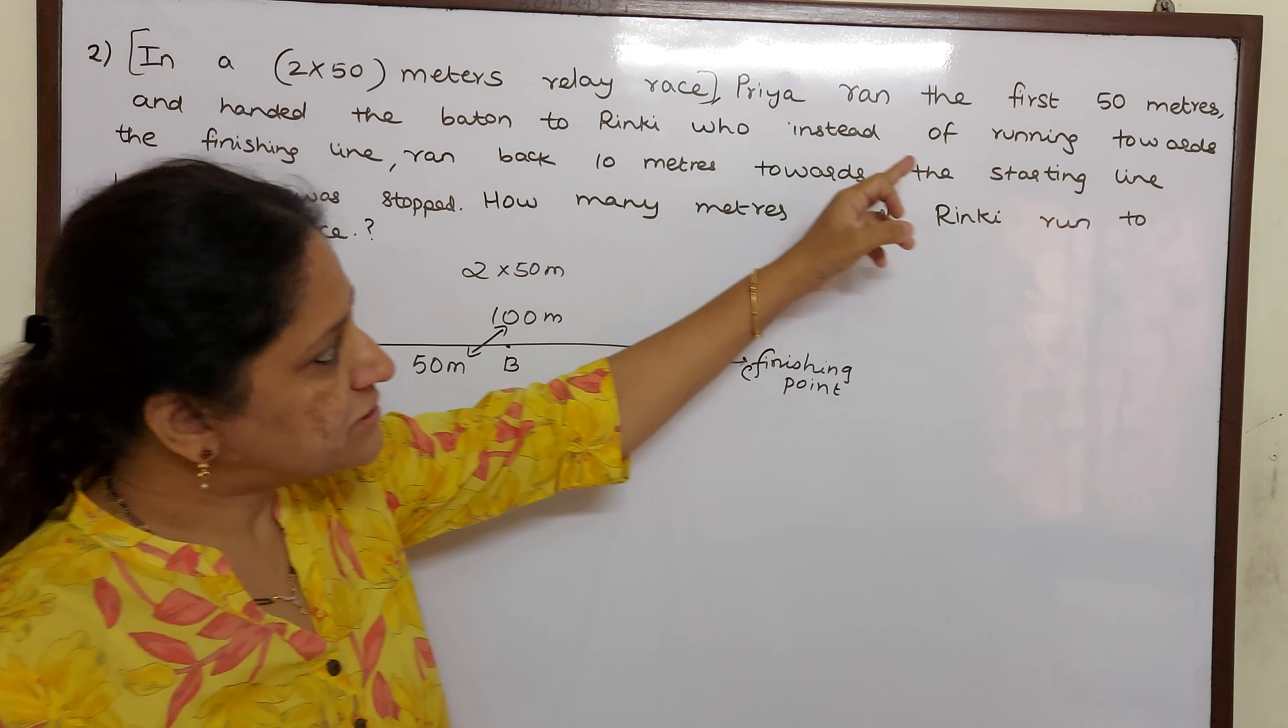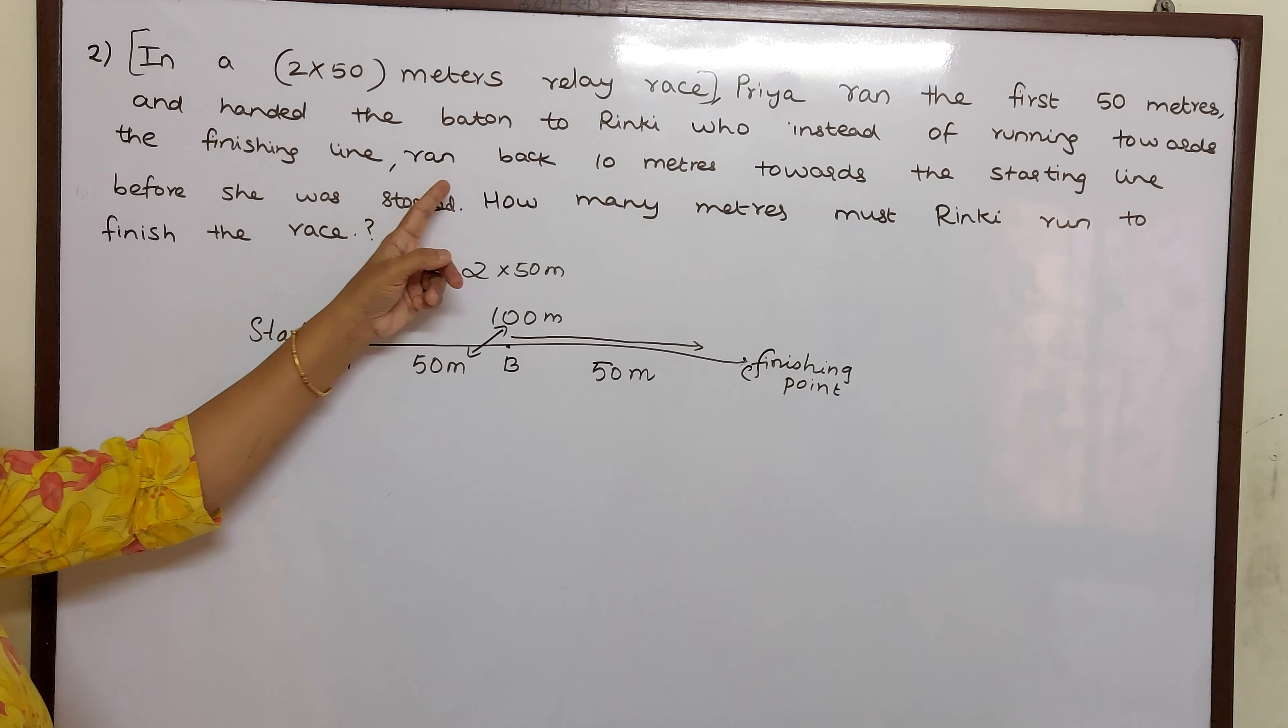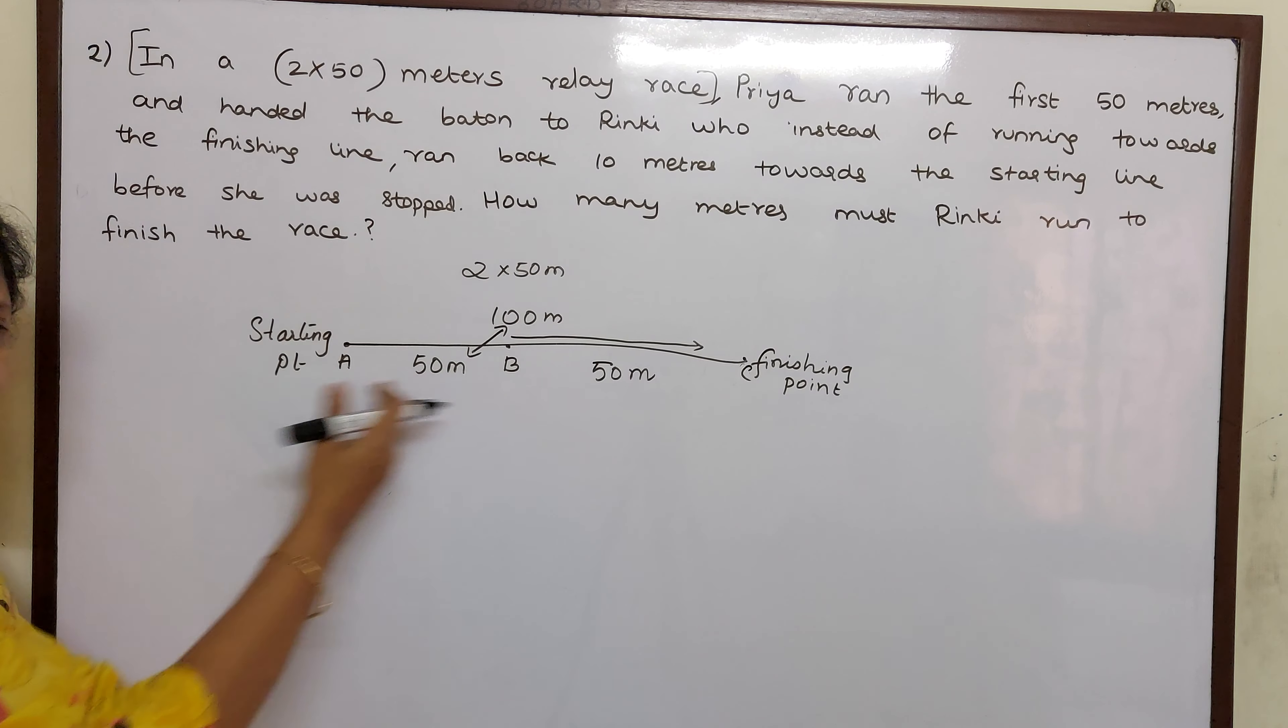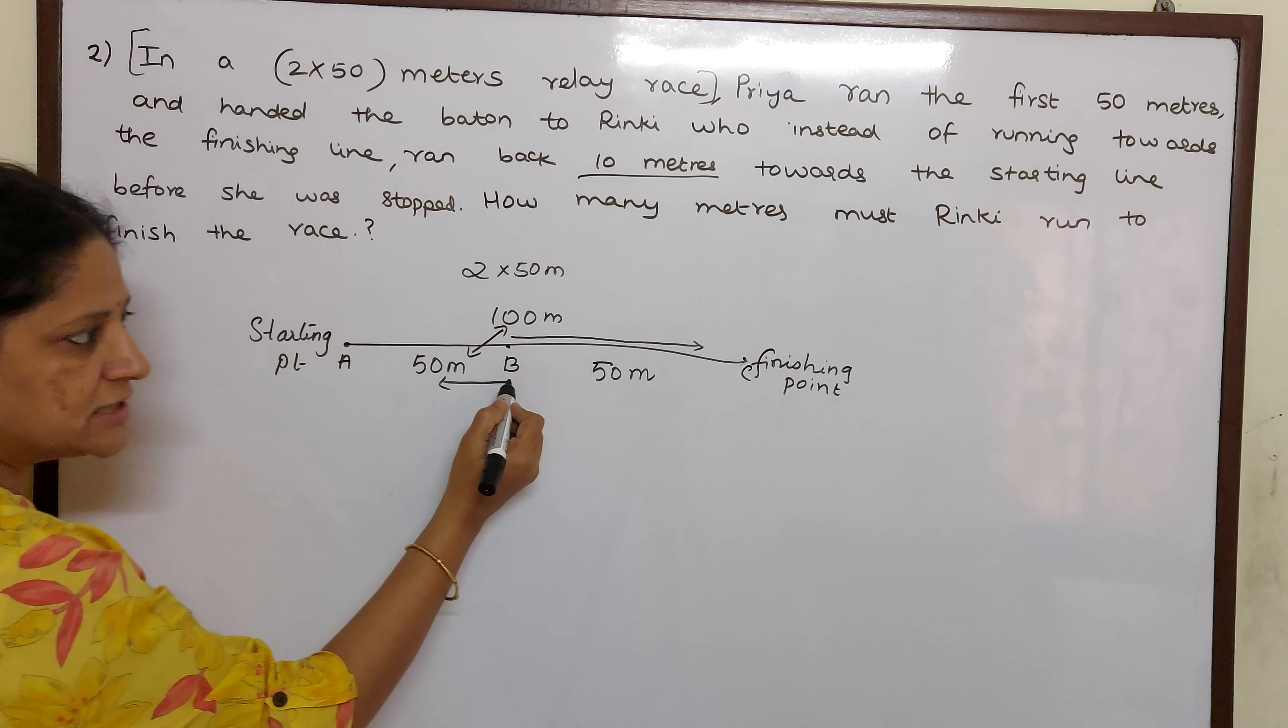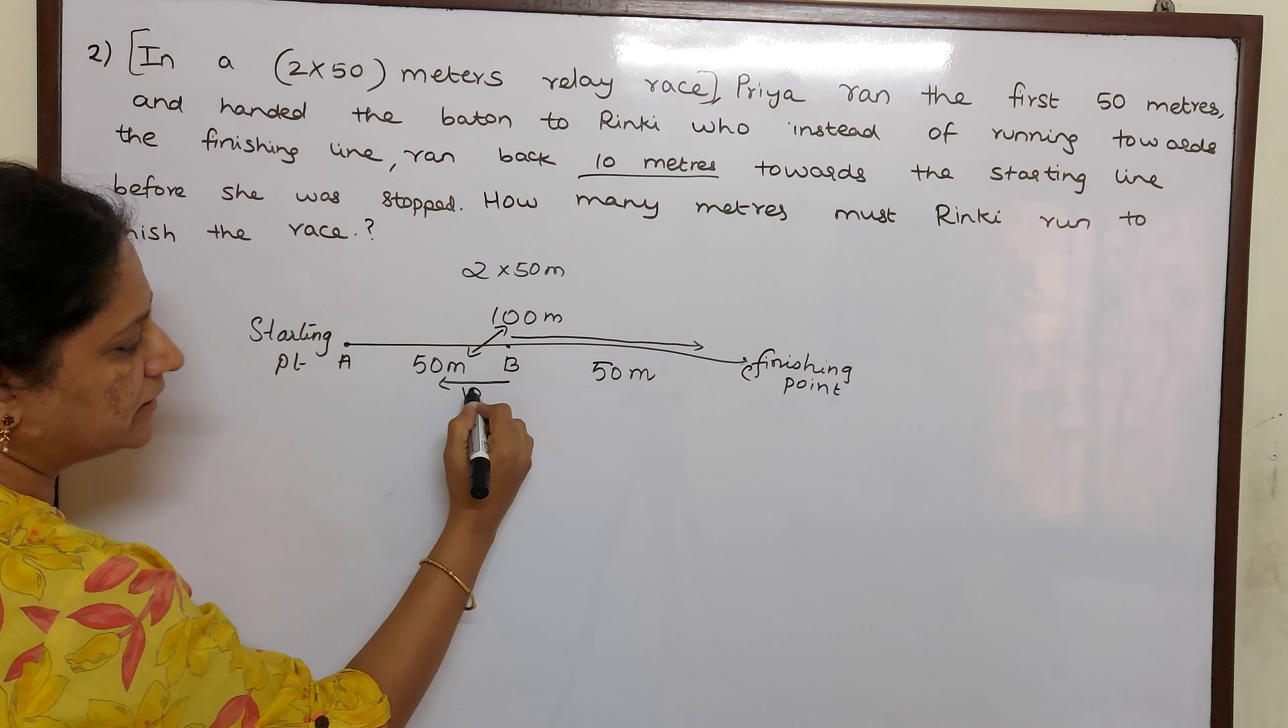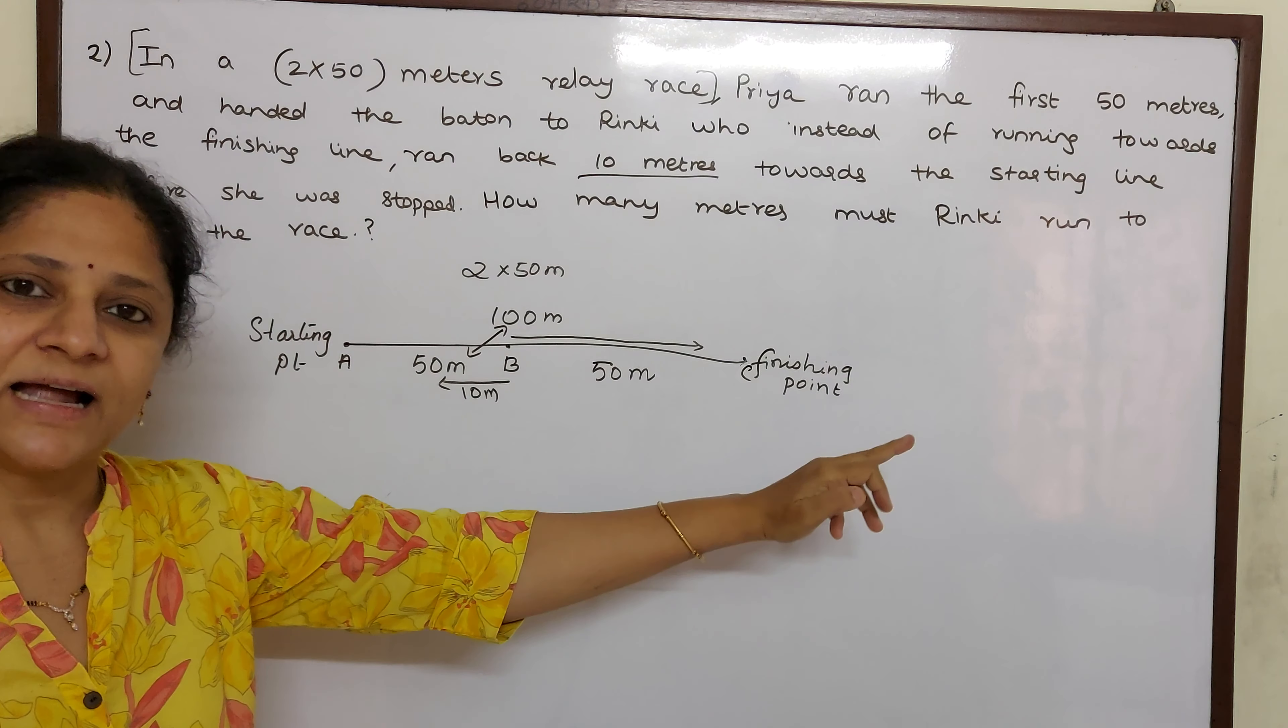Who instead of running towards the finishing line, she has to run from here this side, right? Ran back 10 meters towards the starting line. So she is running back 10 meters. She is running back. Instead of going towards the finishing point, she is coming from this point to starting point. That is 10 meters before she will stop. People are telling stop here. You have to run that side.